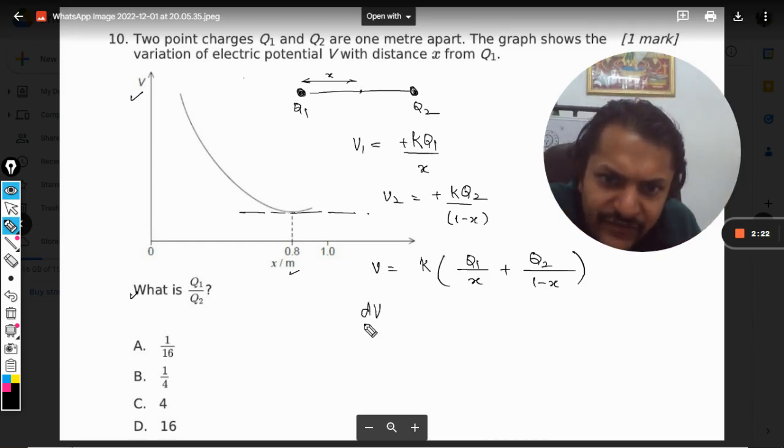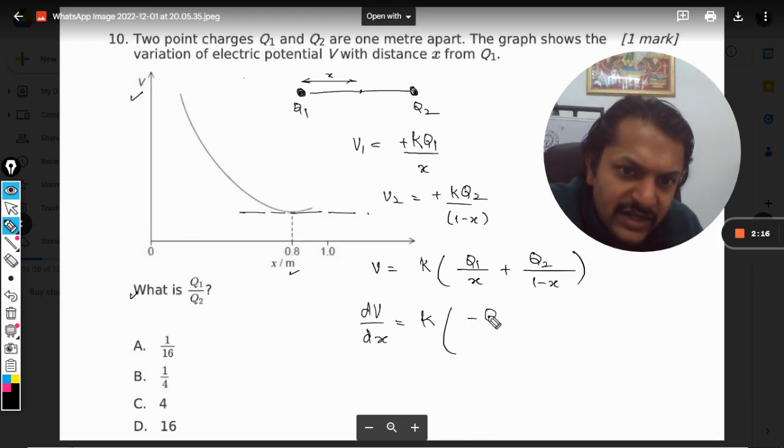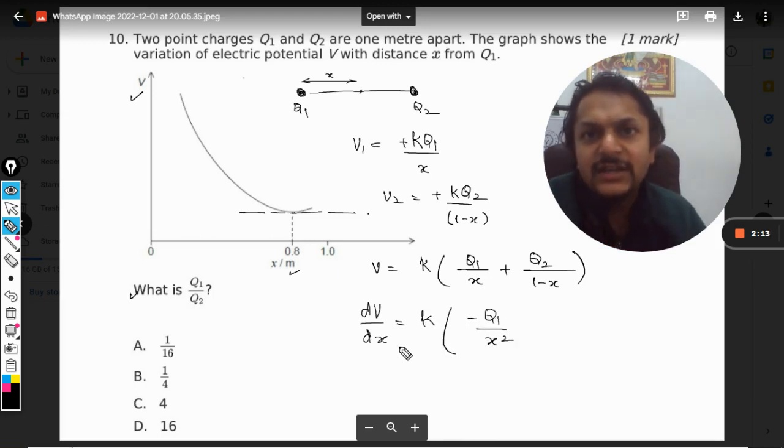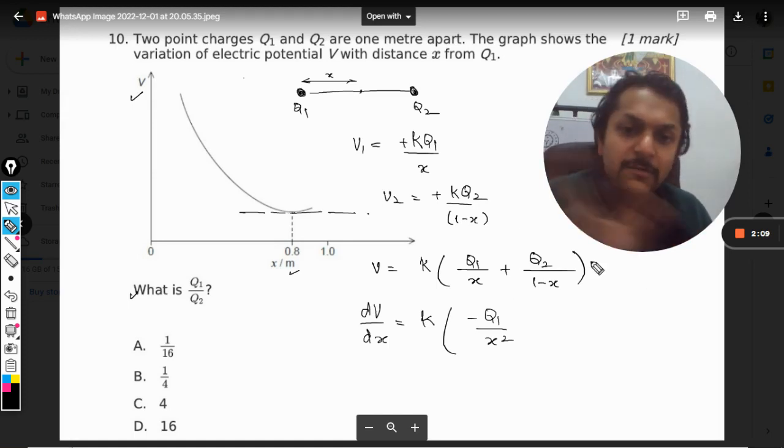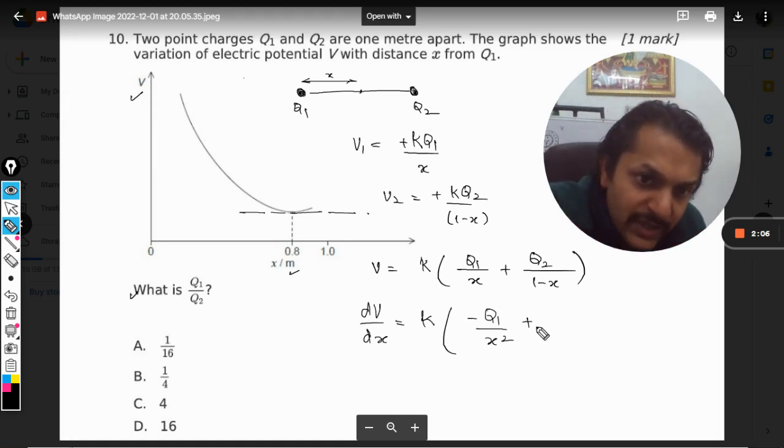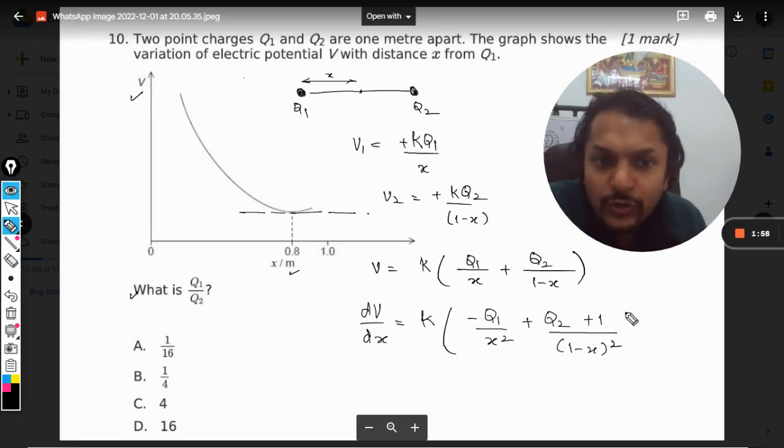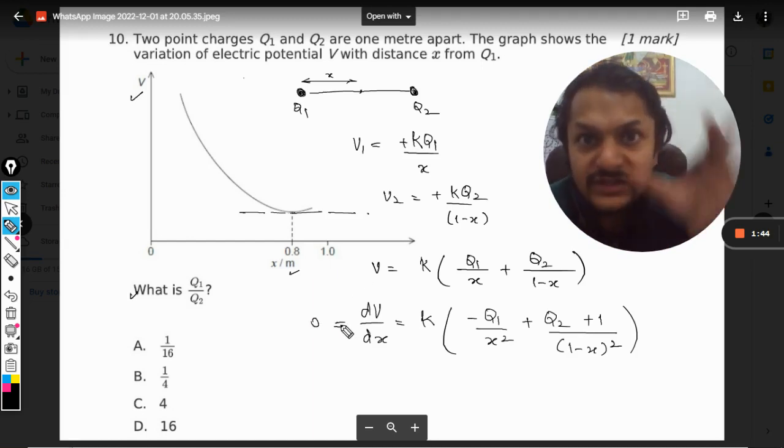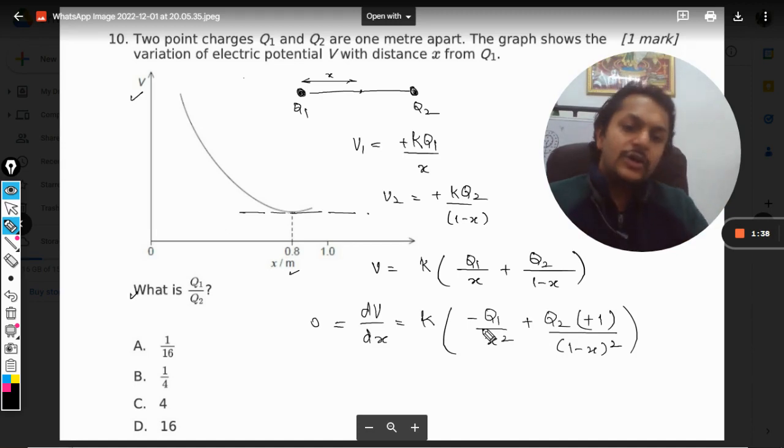So what we do is differentiate it. I hope you understand this. When we differentiate, it comes out to equal to this. Sorry for being a little faster, there are so many things to do. Plus Q2... how to differentiate this? Again it becomes like this, but there's a chain rule also, so it becomes positive. This is how we differentiate this question. Now we equate this equation to zero and find the ratio of Q1 and Q2.